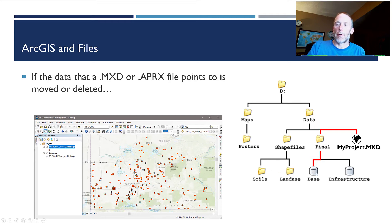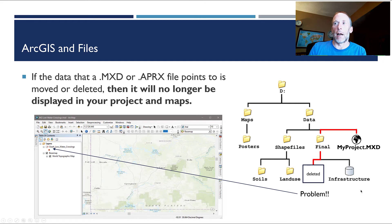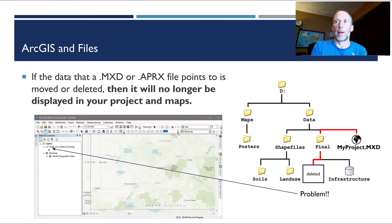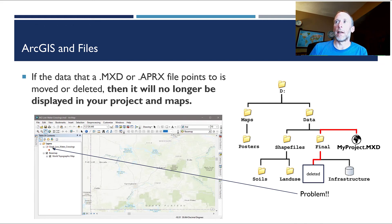If you delete that geodatabase or feature class, or move it somewhere else, you'll have a big problem. The MXD goes to look for the Ozark low-water crossings data, finds it's gone, and you get the red exclamation mark indicating a broken data link. Your beautiful map of red dots is now blank. To fix it, you either have to point GIS to the file's new location or restore it to its original location. Some maps have 50 different data layers, and moving the data breaks all of them at once.